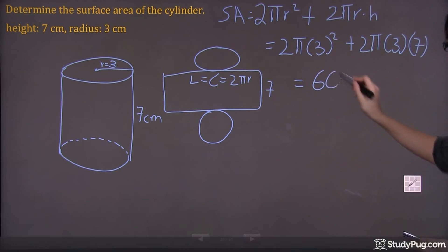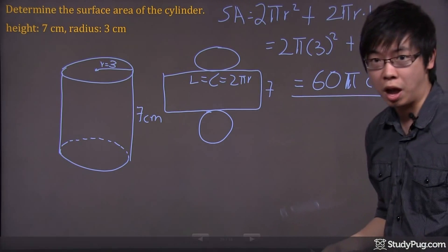I end up with 60 pi. If you're looking for the exact value of the answer, this is the final answer for your exact numbers, which is 60 pi.